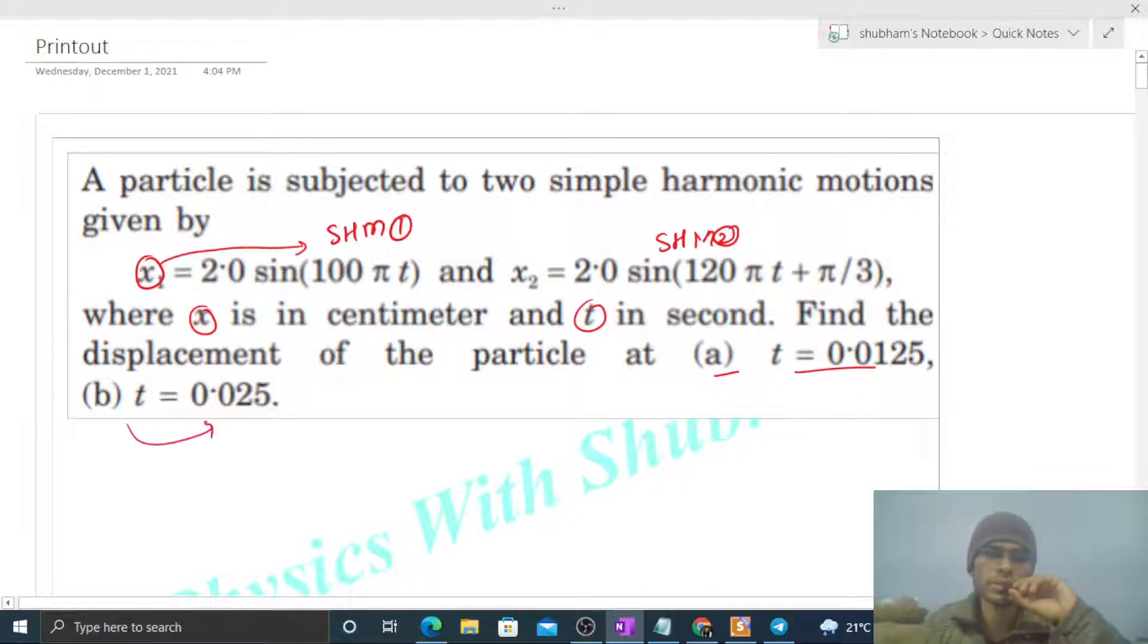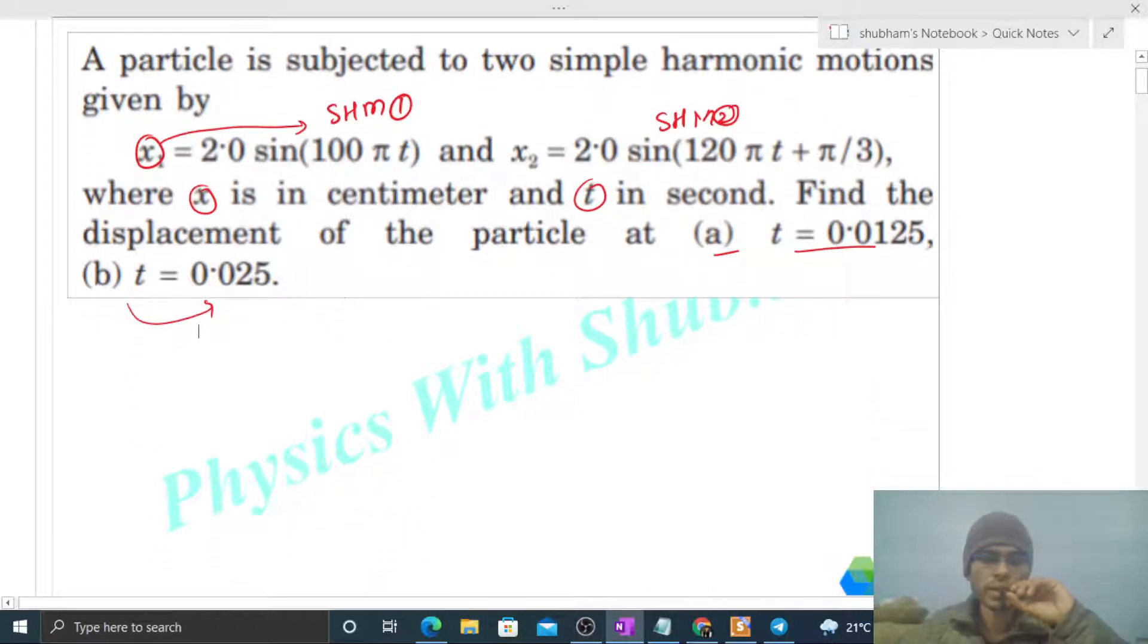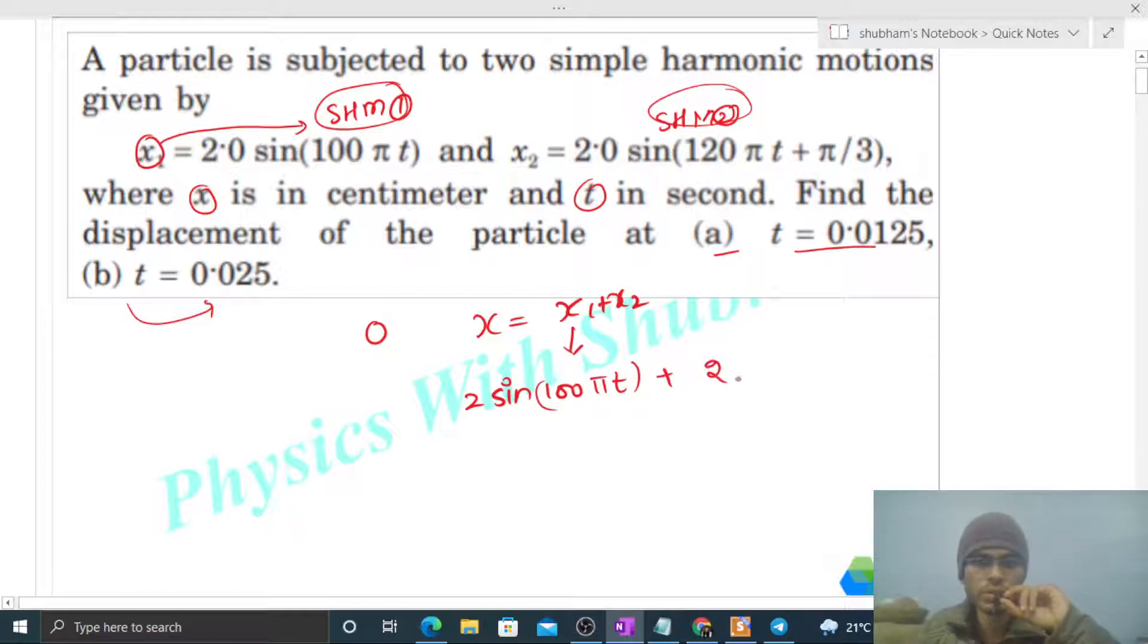We have a particle which we have superimposed, then the resultant displacement or the resultant motion will be x equals x1 plus x2, like we discussed in the last two videos. Just to put the values: x1 will be 2 sin 100 pi t plus x2 is 2 sin 120 pi t plus pi by 3.